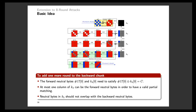The basic idea of the extension is that we add one more round to the backward chunk based on the previous 7-round attacks. In order to obtain such an attack, we have three constraints on the key schedule. First, the forward neutral byte should have constant impact on the first state of the backward chunk, so that the first round of the backward chunk can be computed deterministically. Second, at most one column of K3 can be the forward neutral byte; otherwise there will be more than one unknown byte in each column of state 8, which would invalidate the matching process. Lastly, neutral bytes in K5 should not overlap with the backward neutral bytes. The neutral byte positions could be changed in a real attack as long as this basic pattern is followed.